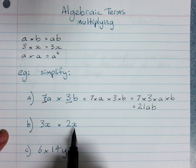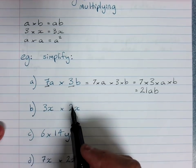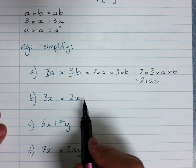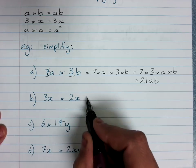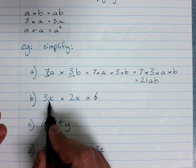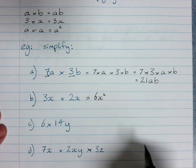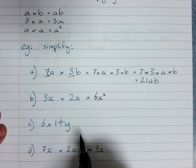So we'll do the shortcut for this one and we'll write the rule. 3x times 2x, well 3 times 2 is 6, and x times x is x squared. So my answer is 6x squared.